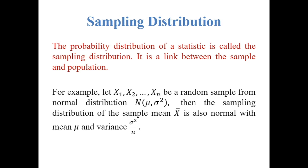The probability distribution of statistics is called the sampling distribution. It is a link between the sample and population. For example, let x1, x2, ..., xn be a random sample from normal distribution with mean mu and variance sigma square. Then the sampling distribution of the sample mean x-bar is also normal with mean mu and variance sigma square by n. Similarly, we can find the sampling distributions of any statistics, which will help us in defining some properties of the estimators.